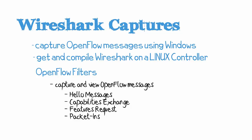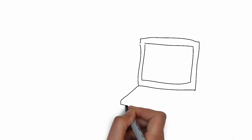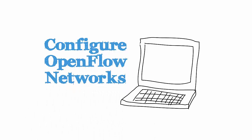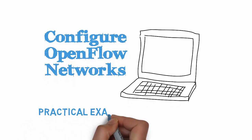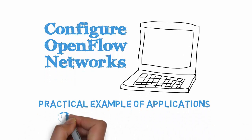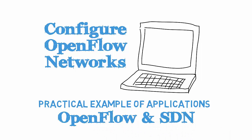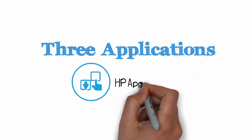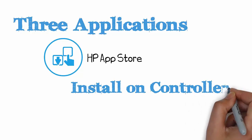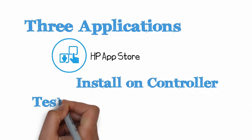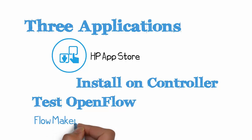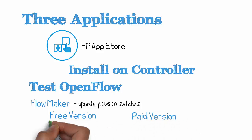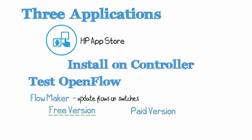I want to make this course as practical as possible, so I'm going to show you how to configure OpenFlow networks both on your laptop and in the real world. I'm going to show you some practical use cases of OpenFlow and SDN which you can use today. Three applications which you can download from the HP app store and install on a controller in your lab include Flow Maker — a very useful application to update flows on switches. There's both a free version and a paid version; the free version is good enough for what we're doing in this course.